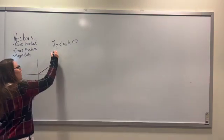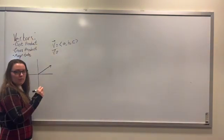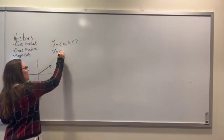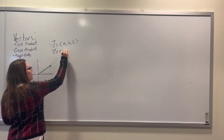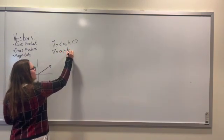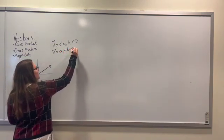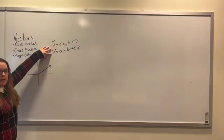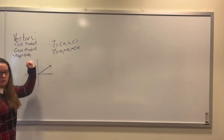You may also see a vector written in a different form. It could be written as A i plus B j plus C k. These two forms mean the same thing. They're just written in two different ways.